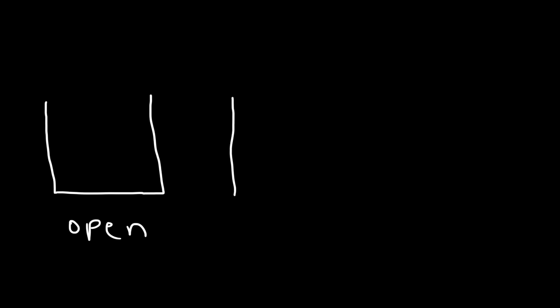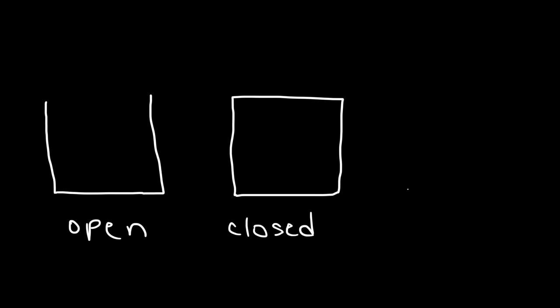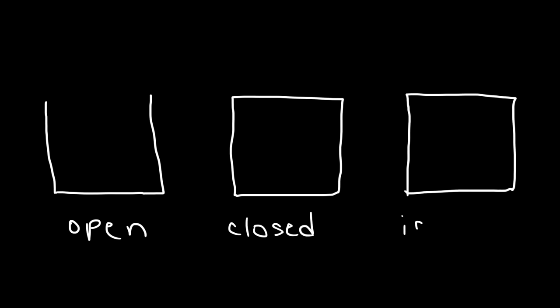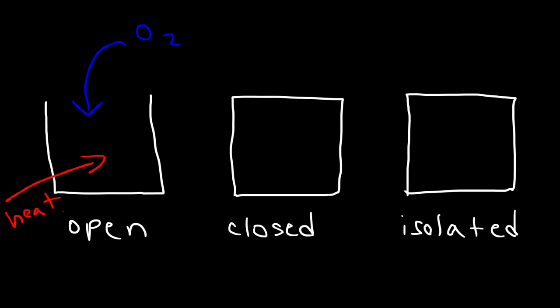There are three types of systems to be familiar with. The first is an open system, the second is a closed system, and the third is an isolated system. In an open system, matter such as oxygen from the air can enter, and heat energy can also flow in — both matter and energy can be transferred into and out of it. In a closed system, matter cannot flow in, but energy still can.